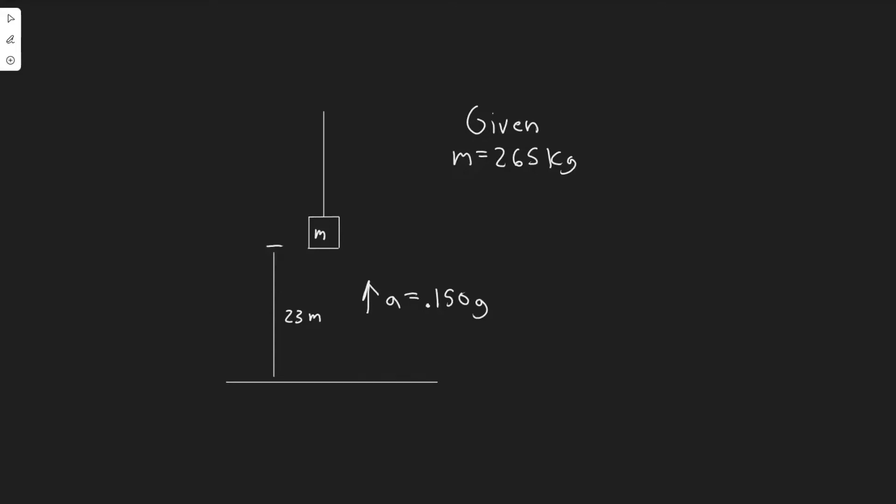In this problem we're told a 265 kg load is lifted 23 meters vertically with an acceleration of A equals 0.150 G by a single cable. Determine A, the tension in the cable; B, the net work done on the load; C, the work done by the cable on the load; D, the work done by gravity on the load; and E, the final speed of the load, assuming it started from rest.